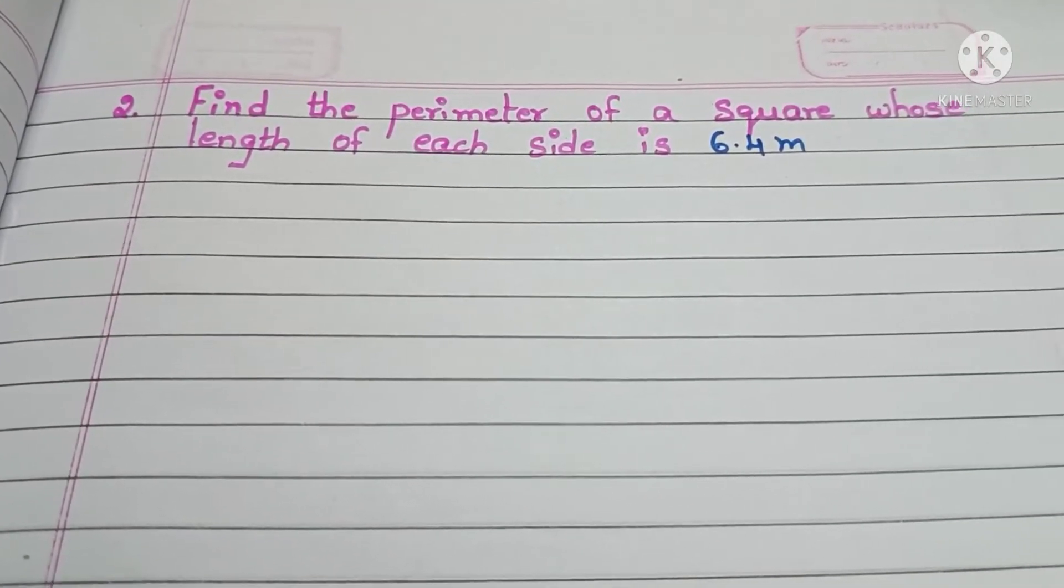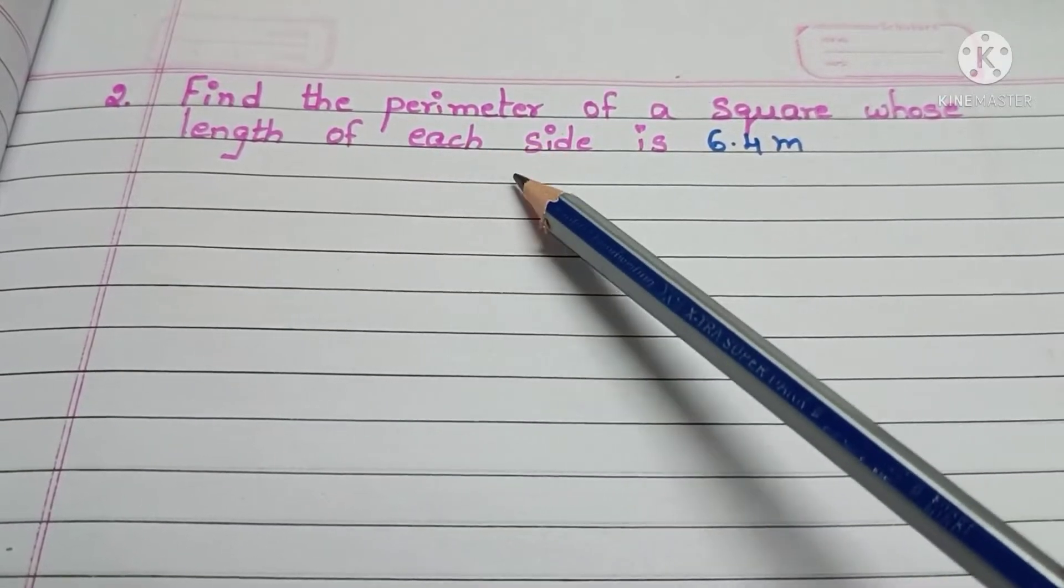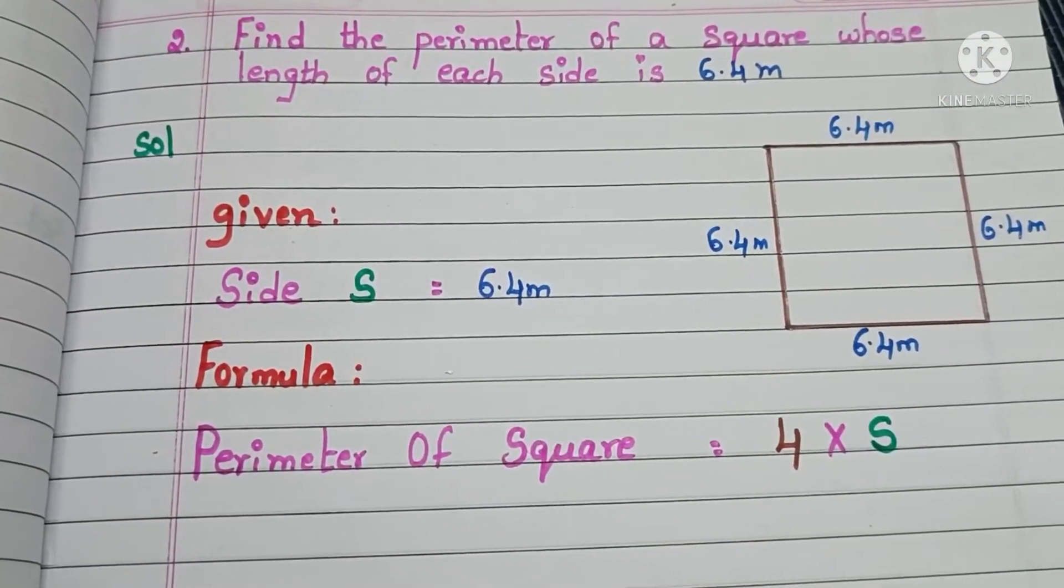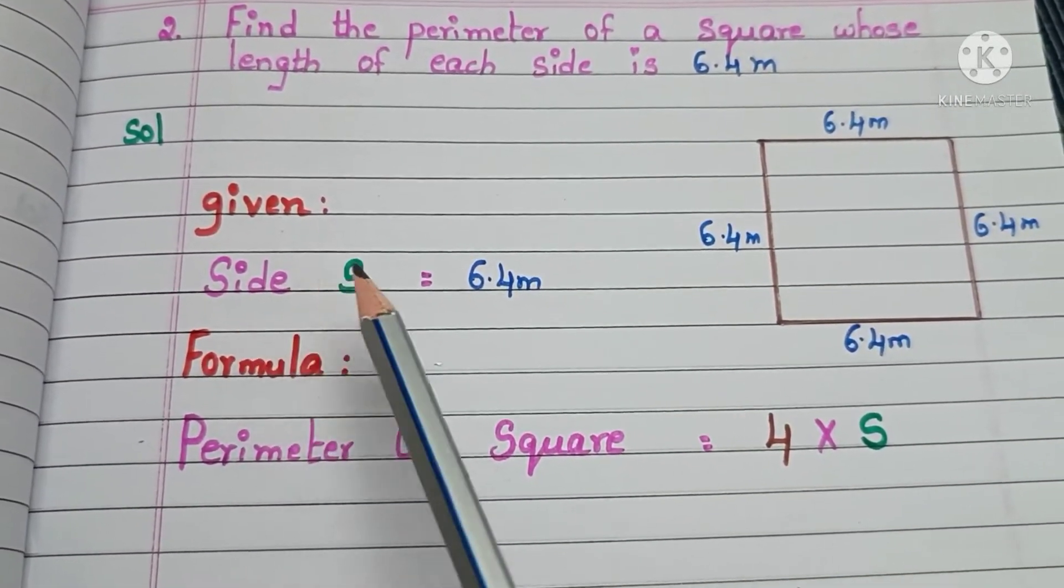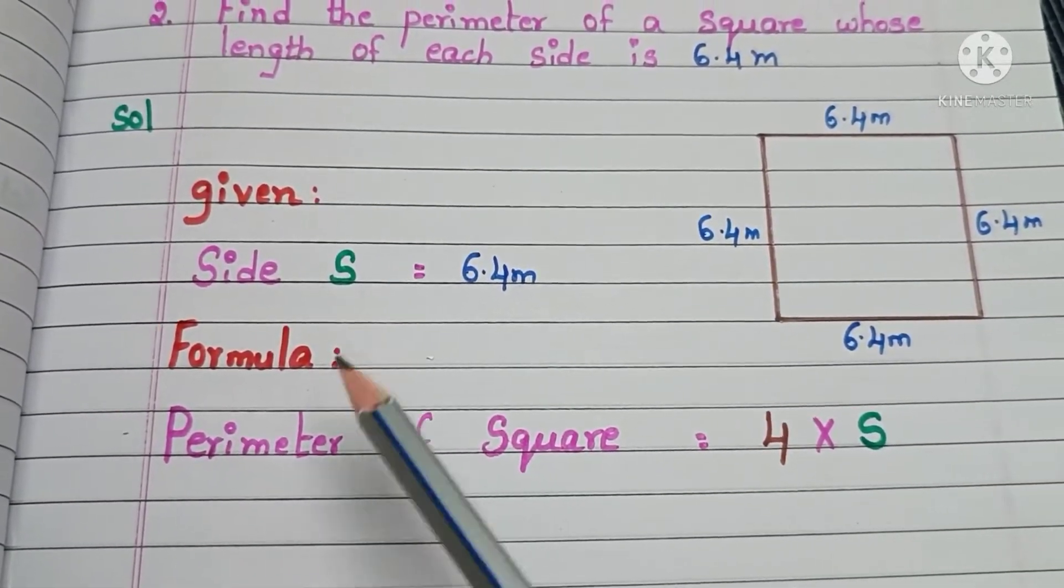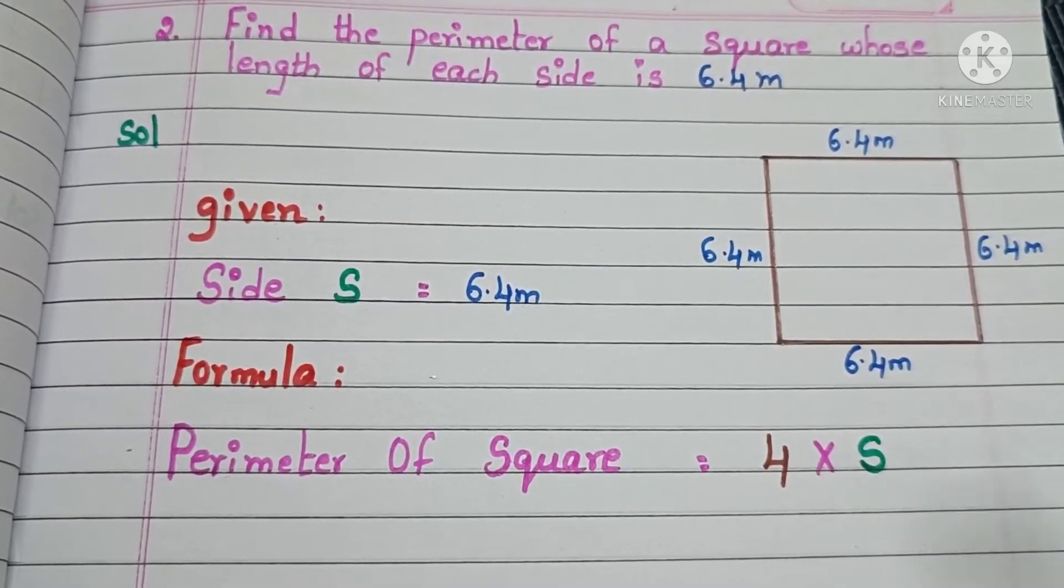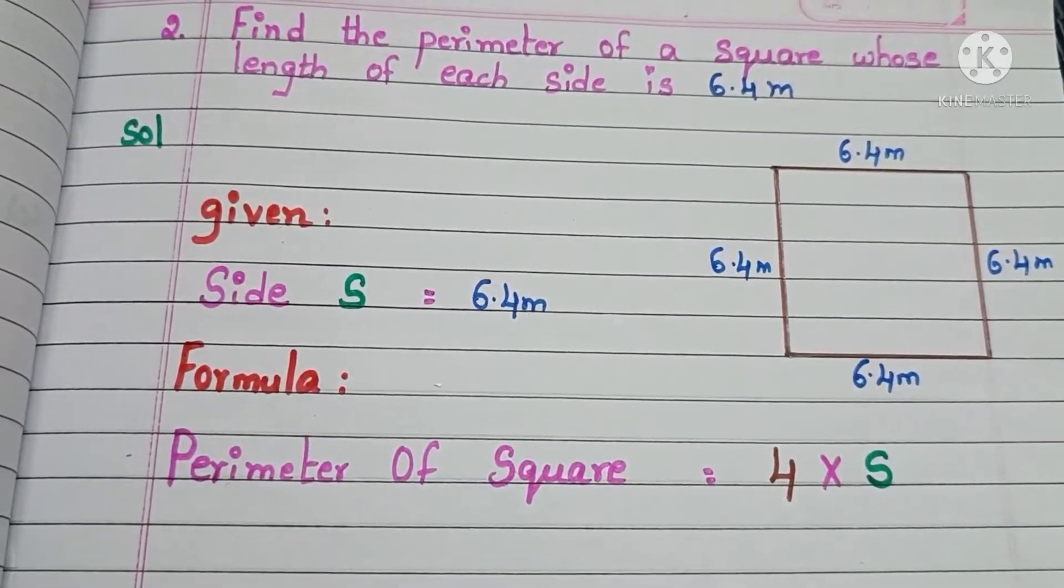Our next question is, find the perimeter of a square whose length of each side is 6.4 meters. Now, let us see the solution. Here, given side S is 6.4 meters and the formula to find the perimeter of a square is 4 times S. Now, substitute the side S value in the formula.